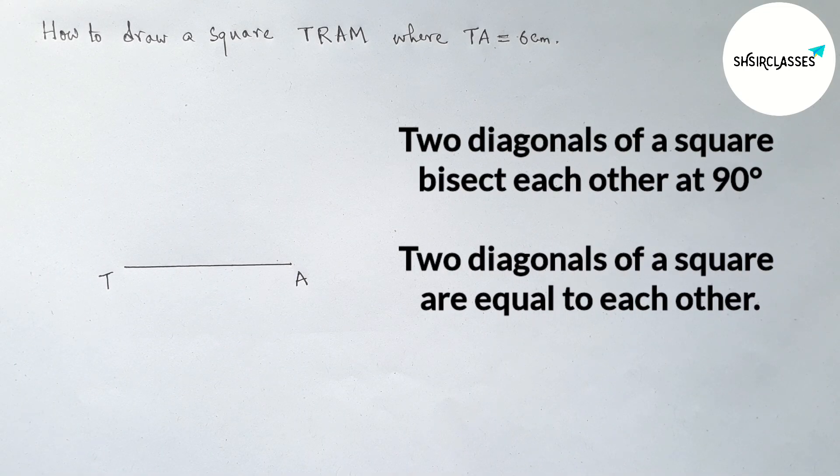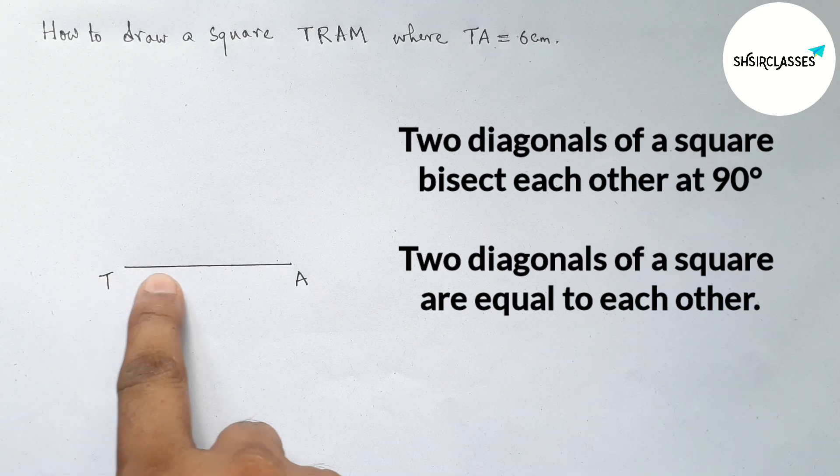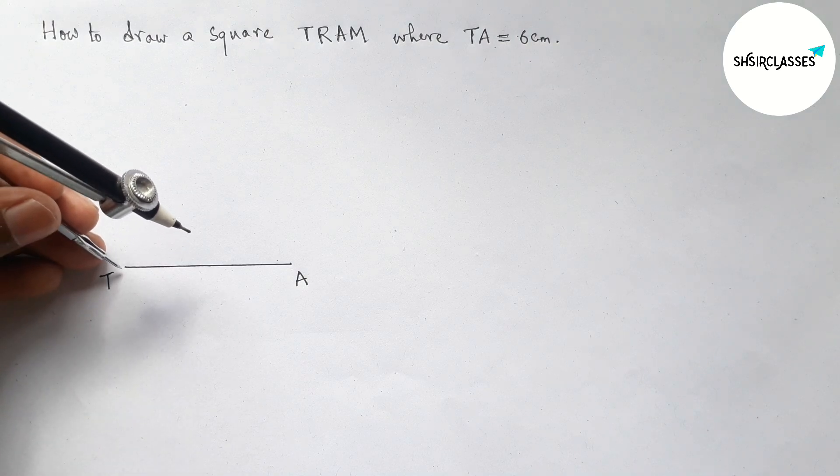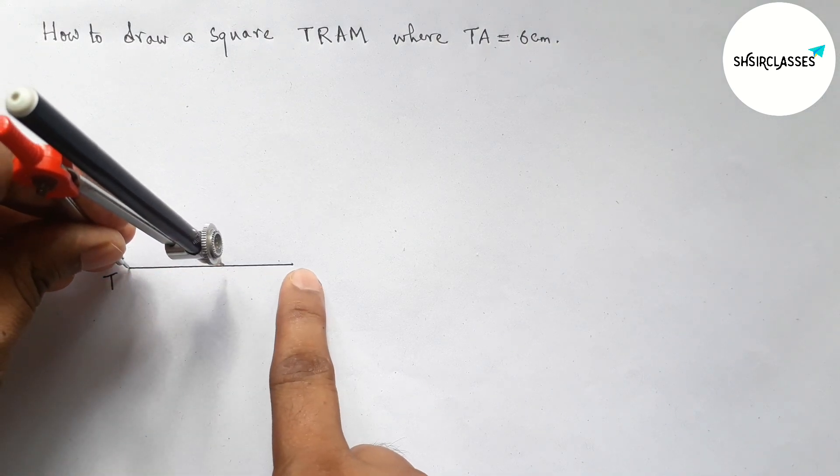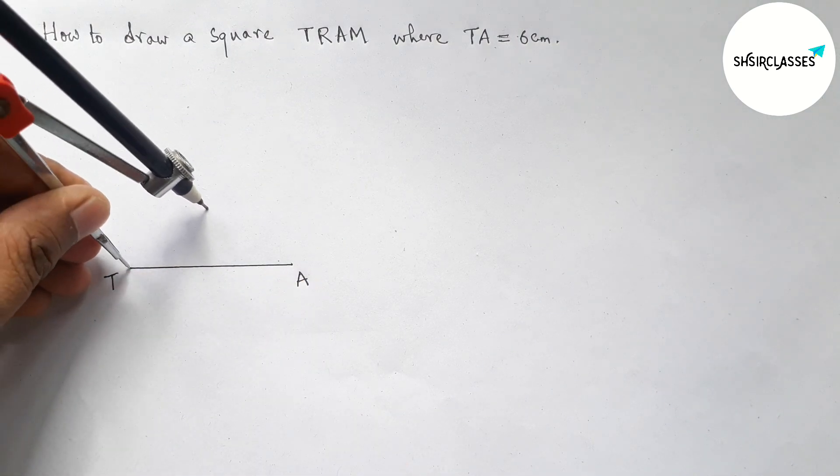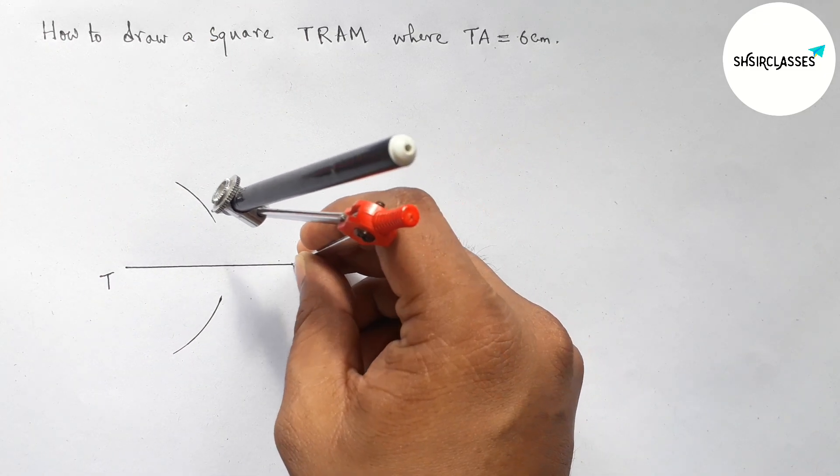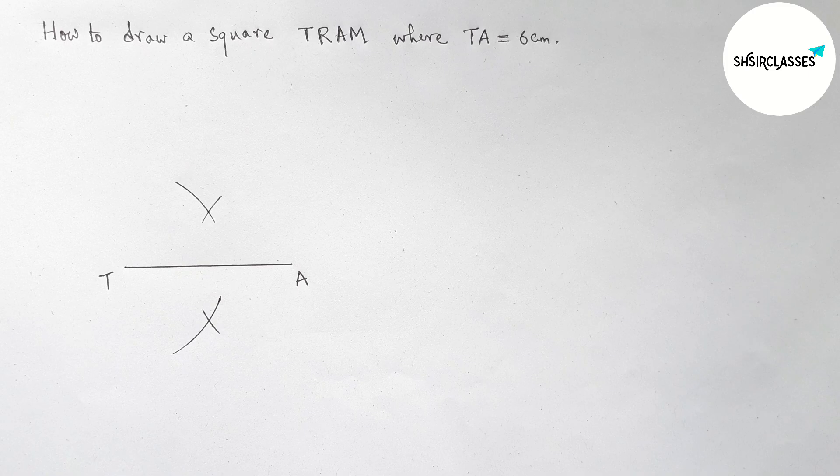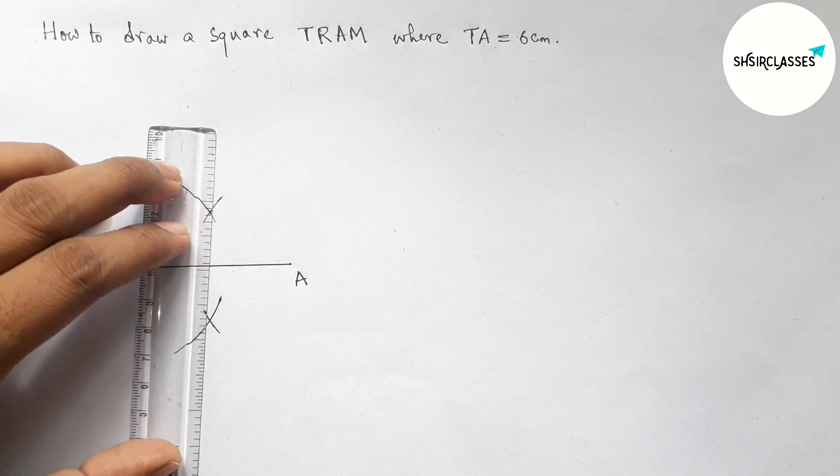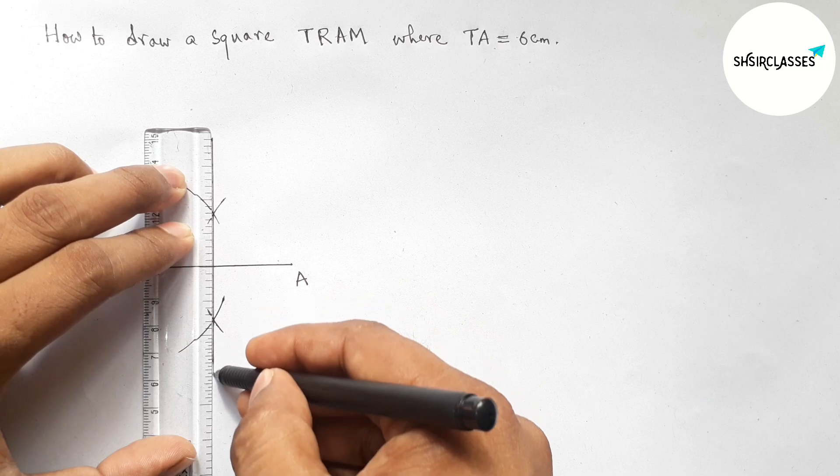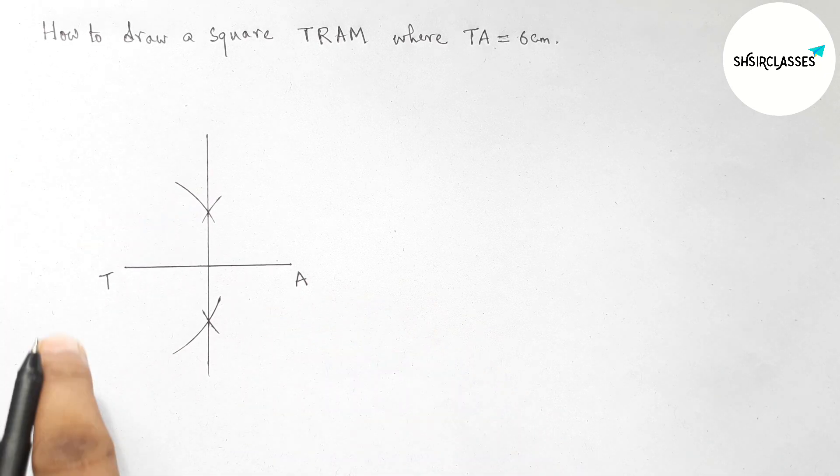Now talking about two properties of a square: two diagonals of a square bisect each other at 90 degrees, and both diagonals are equal in length. Now bisecting the line TA, so putting the compass on point T and taking greater than half of TA and drawing arcs by this way. Now putting the compass on point A and cutting here and here. So now joining this, and it bisects the line TA equally at a point O.